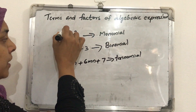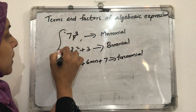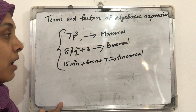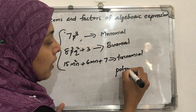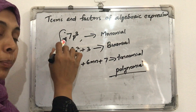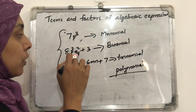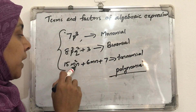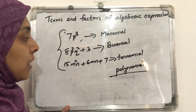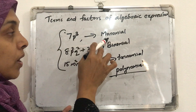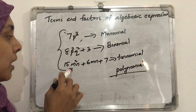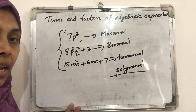Generally, all these algebraic expressions — containing one, two, three, or more than three terms — can be called a polynomial. So 7p³ is also a polynomial; 8p²q² plus 3 is also a polynomial; and 15m²n plus 6mn plus 7 is also a polynomial. But specifically, a one-term polynomial is a monomial, two terms is binomial, and three terms is trinomial.